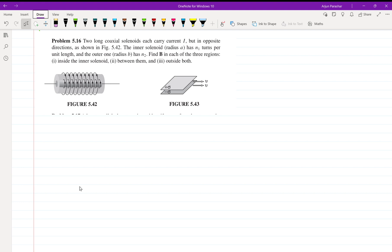Hello everyone, welcome back. Let us start Problem 5.16 on page 240 of Griffith's Electrodynamics. We need to consider two coaxial solenoids, each carrying current I but in opposite directions. This is the diagram. Let me draw the figure, it will be more clear.